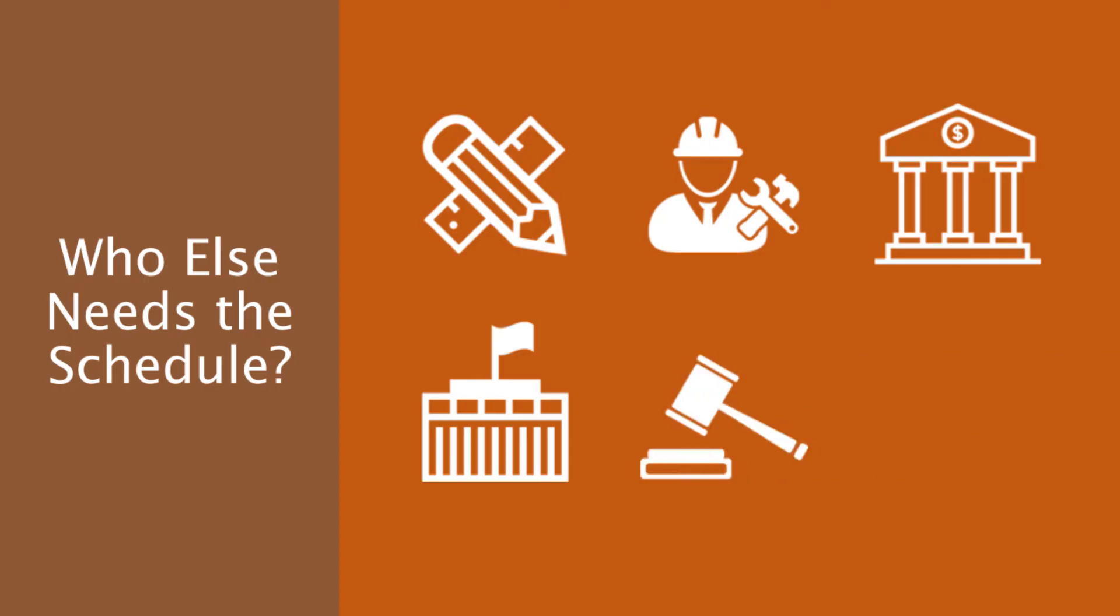Also the government licensing for licensing and permitting, legal consultants, attorneys, and other—all the project parties need to have an idea about the project, not at the same level of details. Of course, the party that needs the detailed schedule is the contractor and then the owner.